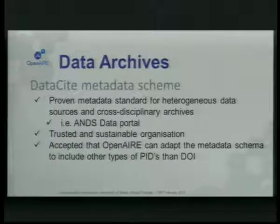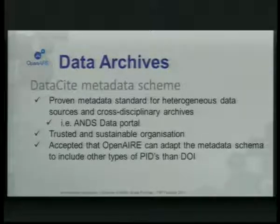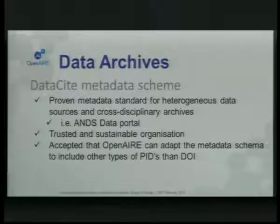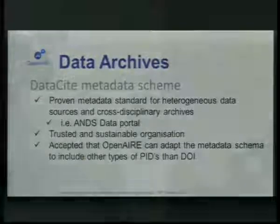For data archives, we decided to go with the DataCite metadata schema, because it's a proven metadata standard for heterogeneous data sources and cross-disciplinary archives, and that was coherent with what we're doing in Open AIRE. It has proven useful in, for instance, the ANDS data portal — the Australian National Data Services data portal — and it has a trusted and sustainable organization behind it. The one issue was that DataCite only accepted data that has DOIs. We approached them, and they agreed to include other types of persistent identifiers. We still think DOIs are a very good idea, but there are other types of persistent identifiers out there.